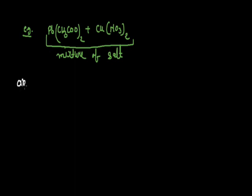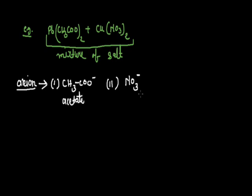Now the anions in these two salts, the anion becomes first acetate that is CH3COO- and second becomes nitrate that is NO3-. So the mixture of these two salts contain two anions, this one is acetate and this one is nitrate.